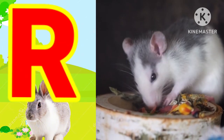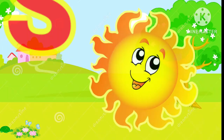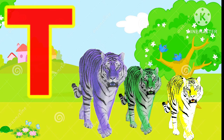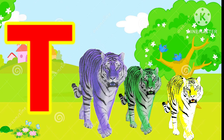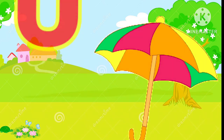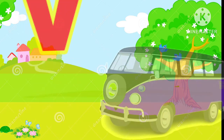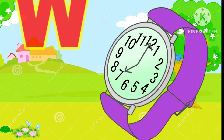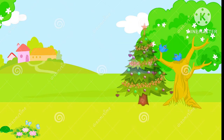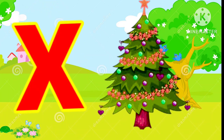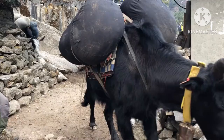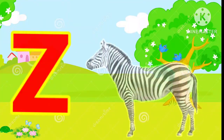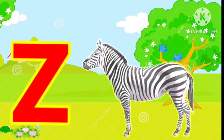R for red, S for sun, T for tiger, U for umbrella, B for van, W for watch, X for atmosphere, Y for yak, J for zebra.